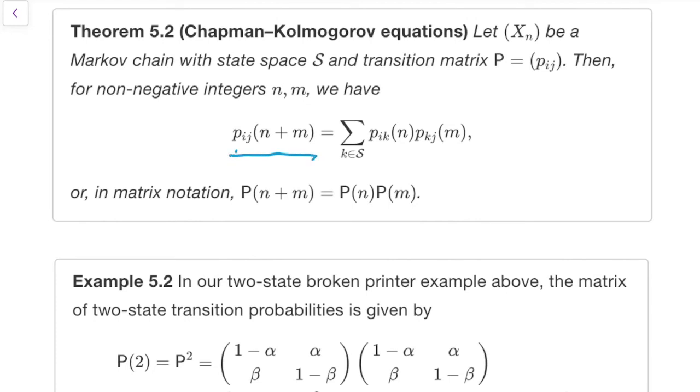It says, if you want to take a route from i to j that is of length n plus m, well, in the first n-steps you'll go from i to somewhere, let's call it k. And then in the remaining m-steps you'll have to make your way from k to j. And that intermediate step k can be any of them, so we sum over all of them.